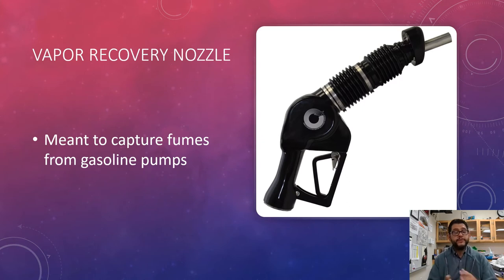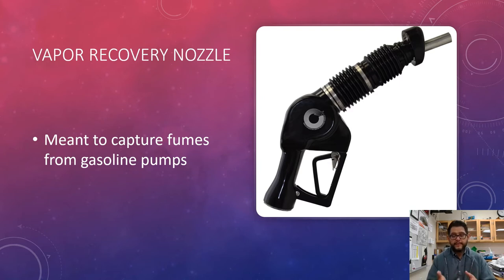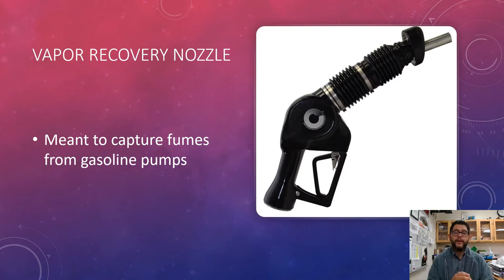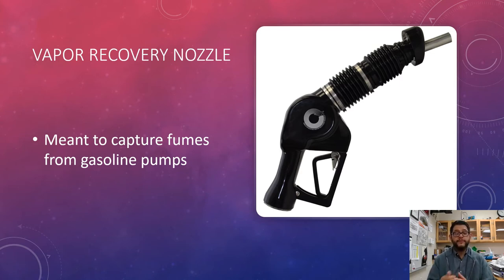We talked about VOCs quite a bit in this unit. Remember that VOCs are those chemicals that vaporize, and in the case of gasoline, that is a volatile organic compound. So when you end up pumping gasoline, one of the ways to reduce that is to have a vapor recovery nozzle. That little cover prevents it from getting into the atmosphere. As we saw earlier, VOCs are a big contributor to things like photochemical smog, so if you can reduce that at the source, you've solved part of that problem.